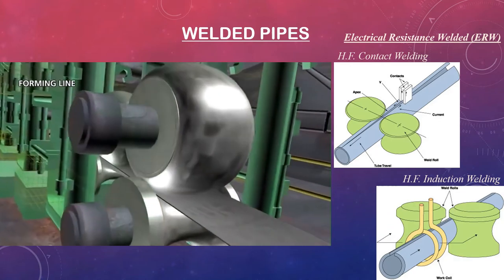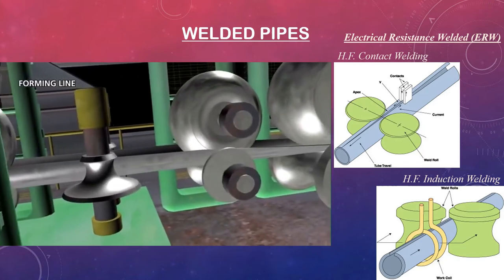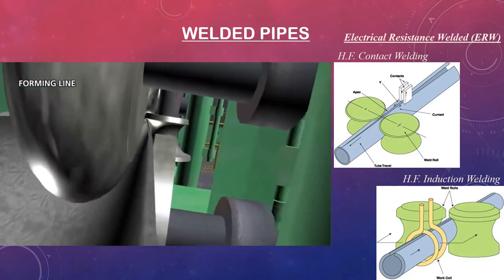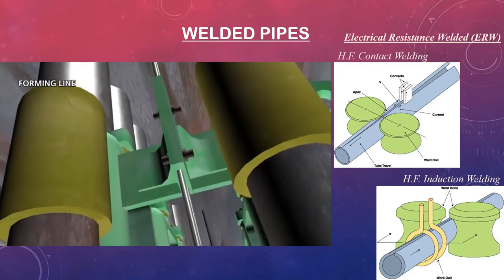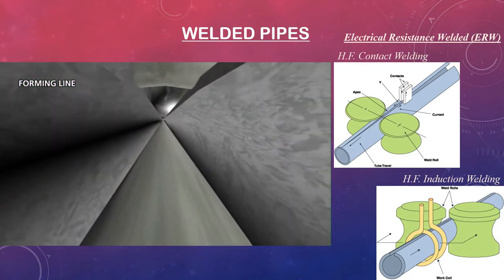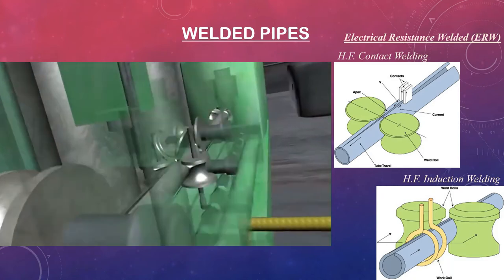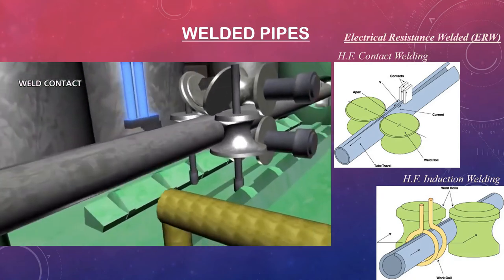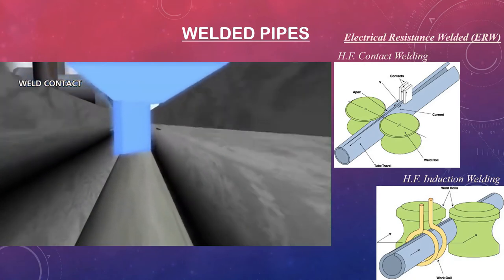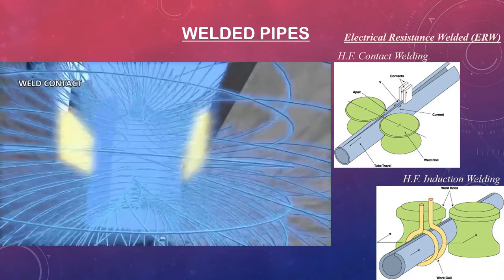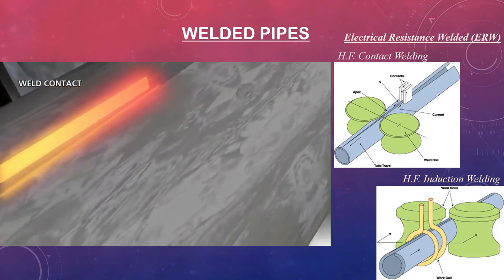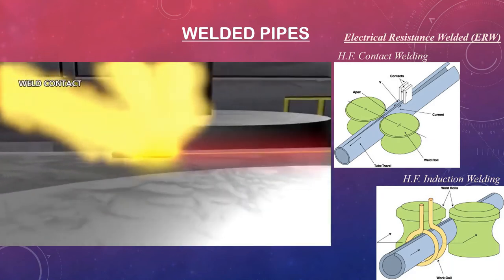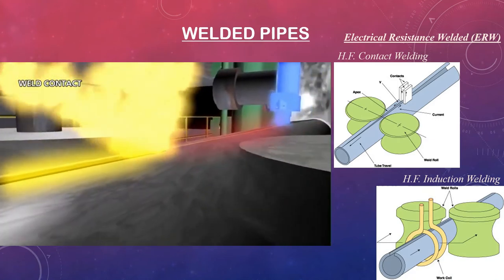In electric resistance welding (ERW), current is passed between the two edges of the steel cylinder to heat the steel to a point at which the edges are forced together to form a bond without welding filler material. In high-frequency contact welding, the weld current is transmitted to the material through contacts that ride on the strip. The weld power is applied directly to the pipe, making this process more electrically efficient and well suited to large diameter and high wall thickness pipes.